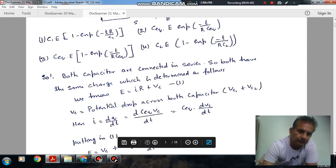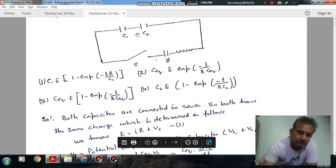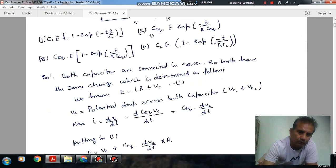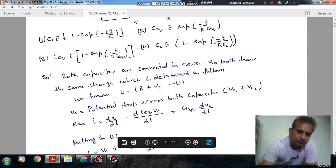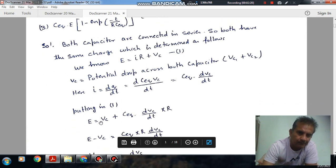If I is the current, then current I is given by DQ by DT. We can substitute this I here. So now it will become E equals V_C plus C equivalent times DV_C by DT times R.